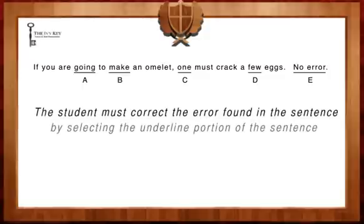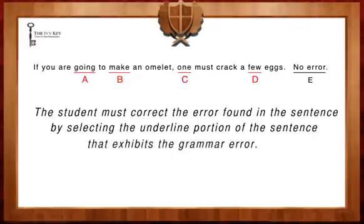For questions in this section of the test, a student must correct the error found in the sentence by selecting the underlined portion that exhibits a grammar error. The first step is to read the sentence through and see if it's correct as written. If that is the case, we would choose answer E, which stands for no error. However, in this sentence, that is not the case.